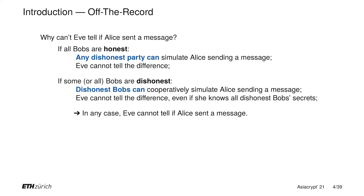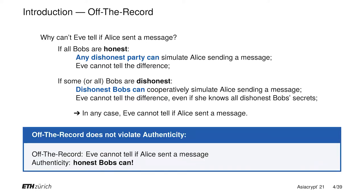So in any case, Eve cannot tell if Alice is sending a message or if someone is simulating Alice sending a message. I want to make a note here that off-the-record does not violate authenticity. Off-the-record guarantees that Eve, who is not a designated receiver, cannot tell if the sender sent a message. Authenticity guarantees that honest Bobs can.